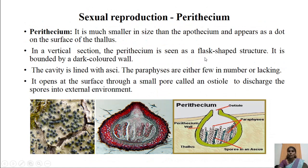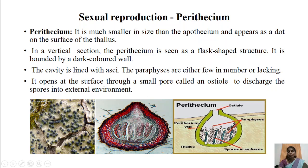The second type of fruiting body produced in ascolichens is the perithecium. The perithecium is much smaller in size compared to the apothecium and appears as a dot-like structure on the surface of the lichen thallus. In vertical section, the perithecium appears as a flask-shaped structure covered by a thick dark-colored wall, whose cavity is lined with asci. Paraphyses in perithecium are fewer or sometimes absent. The perithecium opens at the surface through a small pore called the ostiole, through which ascospores are released into the external environment.